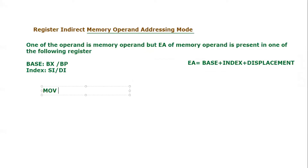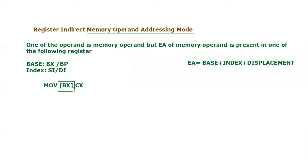Let's take an example. We are writing MOV [BX], CX. First of all, is it a memory operand addressing mode? Yes, it is a memory operand addressing mode because we can see that there is a square bracket mentioned. Whenever we see a square bracket, that means it is a memory operand, so this is definitely a memory operand addressing mode. Furthermore, it is not direct because a direct value is not given in square brackets — we can see a register mentioned, which is the BX register.